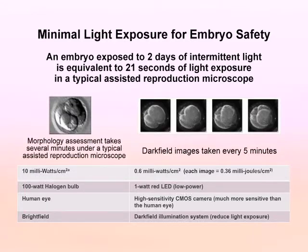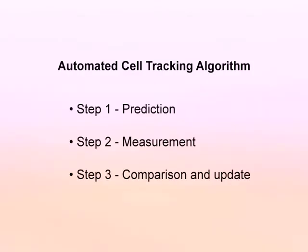Dark field images taken every five minutes over the course of two days is actually equivalent to only 21 seconds of light exposure under a typical assisted reproduction microscope. For the second component of the imaging technology, there are three steps to obtain an automated cell tracking algorithm: prediction, measurement, and comparison and update.